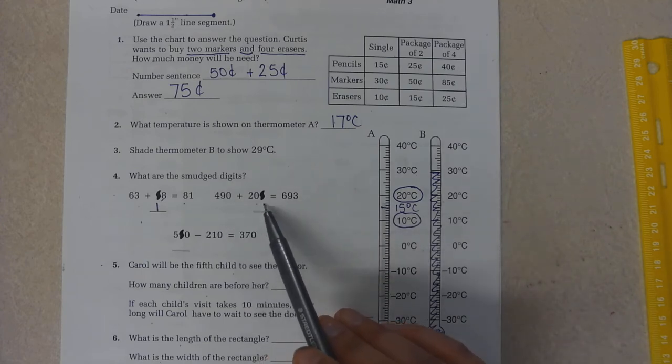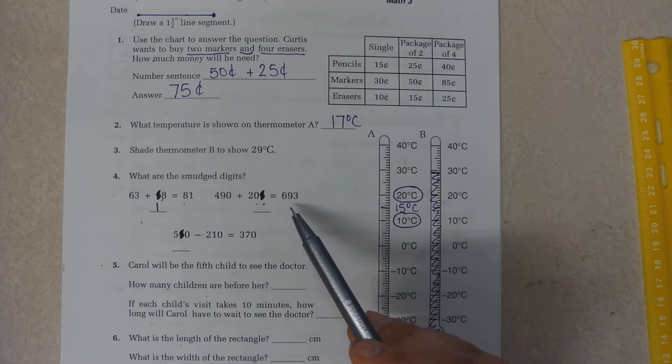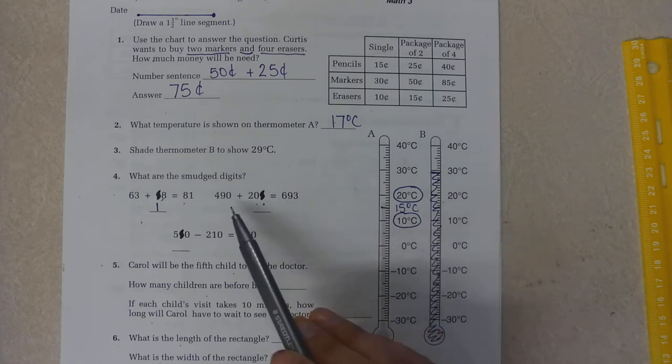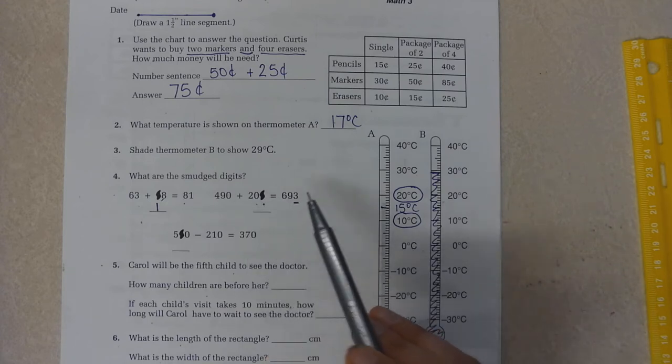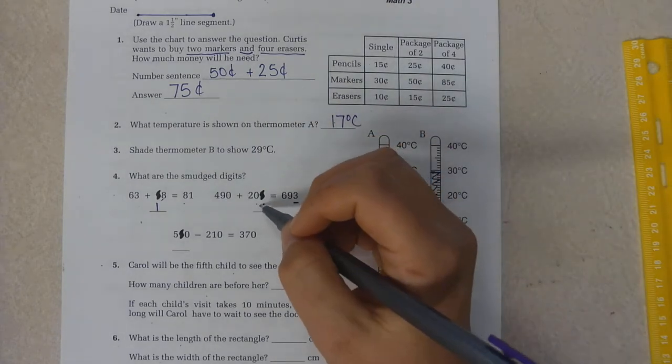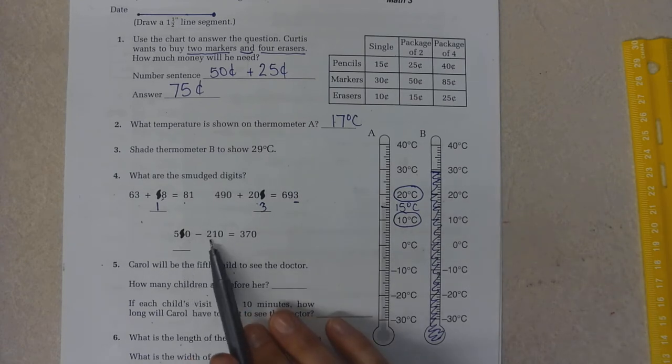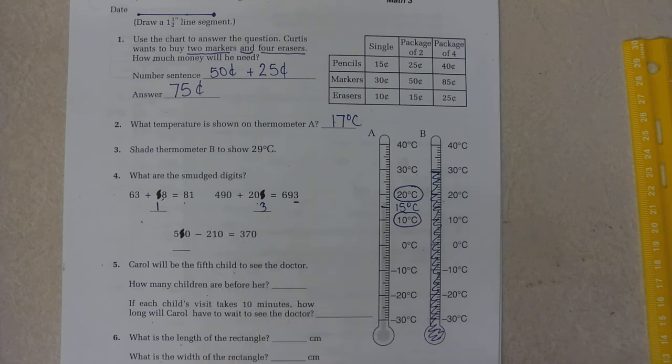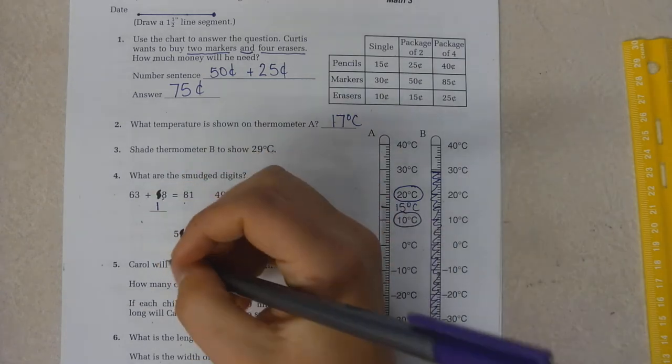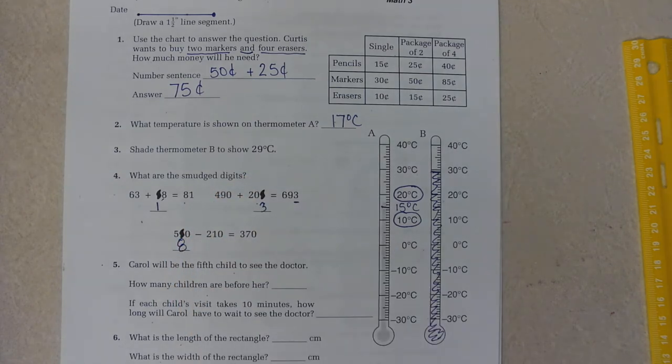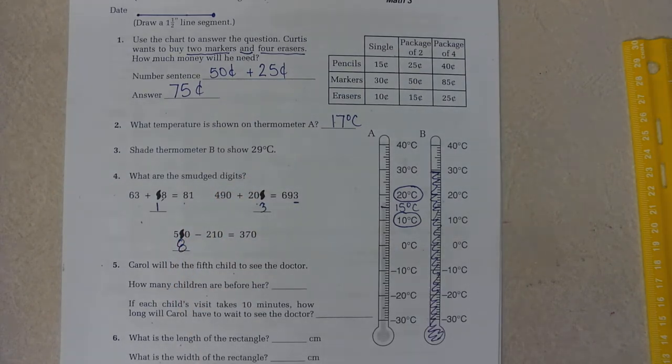490 plus 200 something equals 693. 0 plus 3 equals 3. 500 and something minus 210. So 5 take away 2 is 3. What take away 10 is 7? 8 tens take away 1 ten is 7 tens. 8 tens.